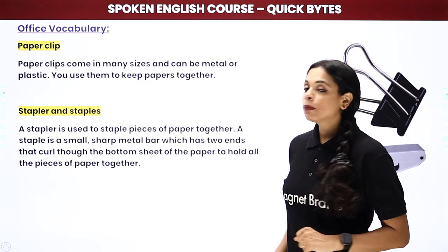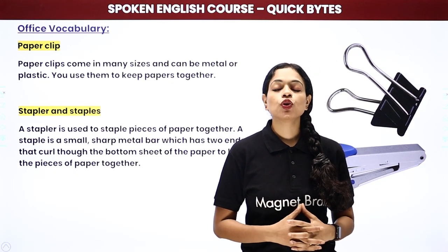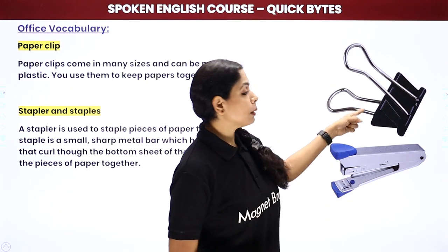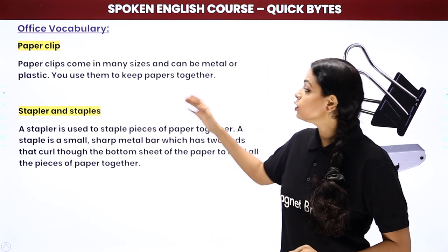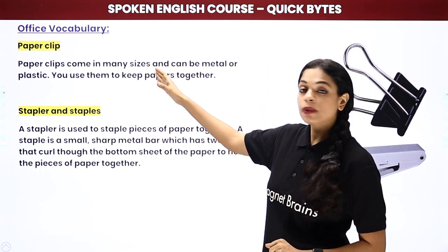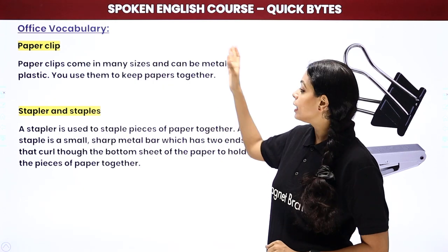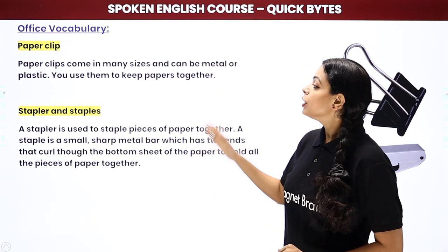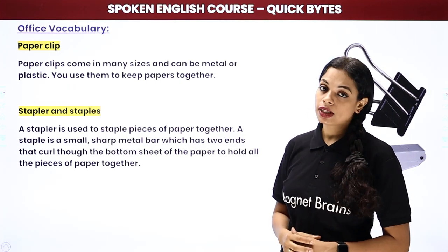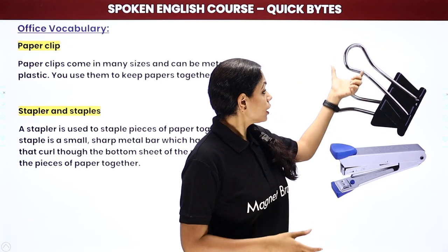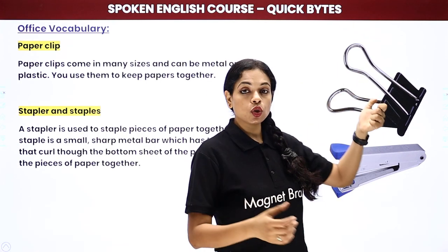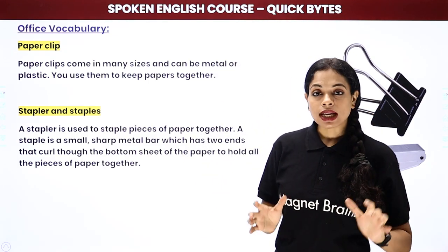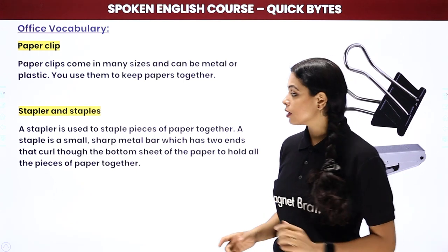In desk supplies, one of the basics is a paper clip. Paper clips come in different sizes and can be metal or plastic. You use them to keep papers together — you press the paper clip and attach it to the papers so they don't move. Paper clips are used to hold papers together.